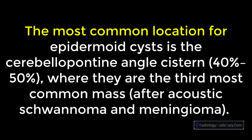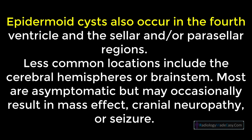The most common location for epidermoid cysts is the cerebellopontine angle cistern, accounting for about 40 to 50% of cases, where they are the third most common mass after acoustic schwannoma and meningioma. They also occur in the fourth ventricle and sellar or parasellar regions. Less common locations include the cerebral hemispheres or brainstem. Most are asymptomatic but may occasionally result in mass effect, cranial neuropathy, or seizure.